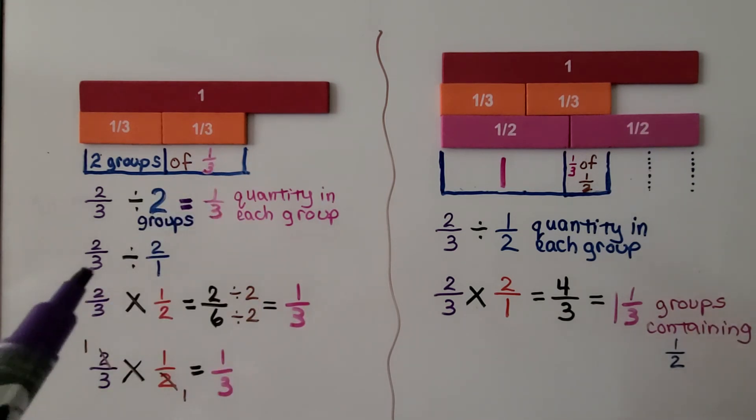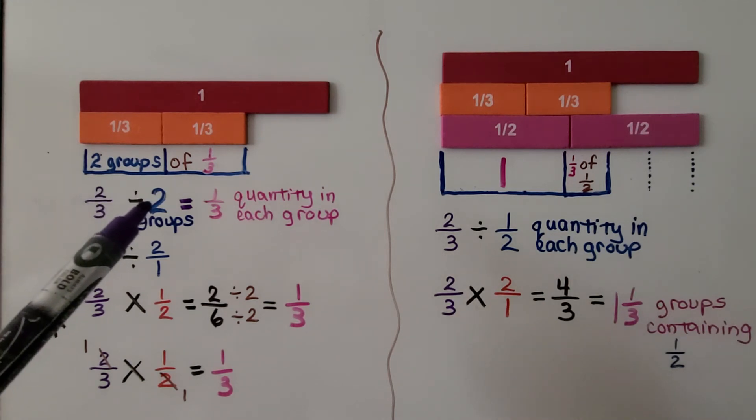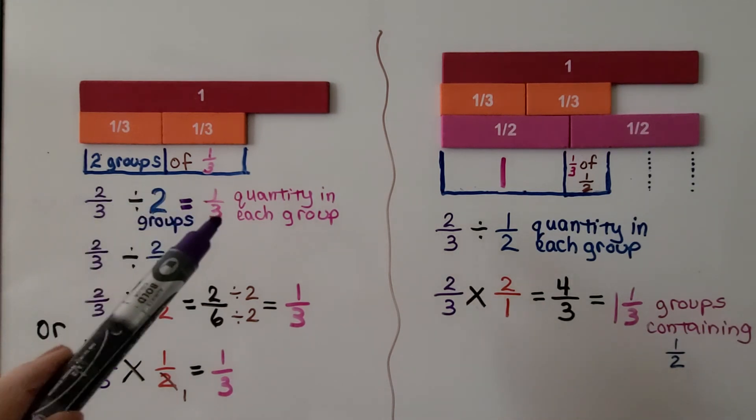We could also cross-cancel, because we have a 2 here and a 2 here. We can cancel them as 1s. Now we have 1×1 is 1, and 3×1 is 3. We still get ⅓, but instead we simplified the equation. So, ⅔ divided by 2 equals ⅓.